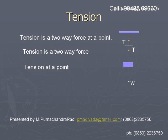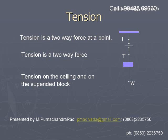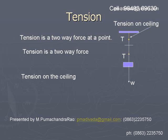That means, at that point of the string, two forces act — one in the upward direction, the other one in the downward direction. I have shown another two arrows. If you consider the top rectangle as the ceiling, on the ceiling, the tension acts in the downward direction.